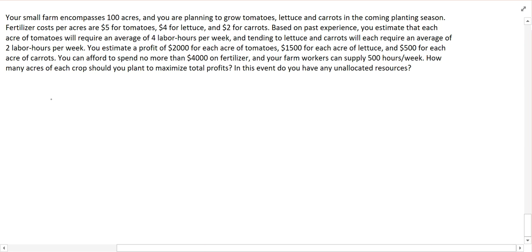So, the unknowns that we have, the things that we're trying to find, is how much tomatoes to plant, how much lettuce to plant, and how much carrots to plant. So let's say T for tomatoes, L for lettuce, and C for carrots.